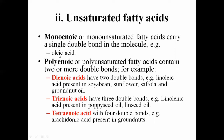For example, oleic acid is a monounsaturated fatty acid. The other type is polyunsaturated. Polyunsaturated means two or more double bonds are present. If you have two double bonds, it will be a dienoic fatty acid. If you have three double bonds, it will be known as a trienoic fatty acid. And if you have four double bonds, they will be known as tetraenoic fatty acids.